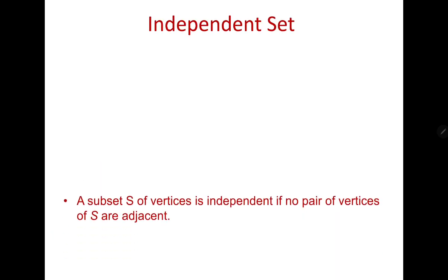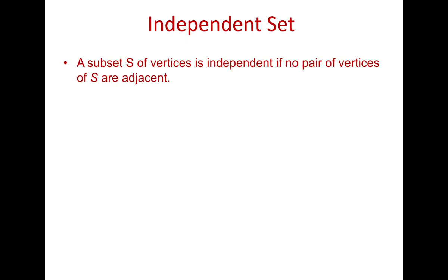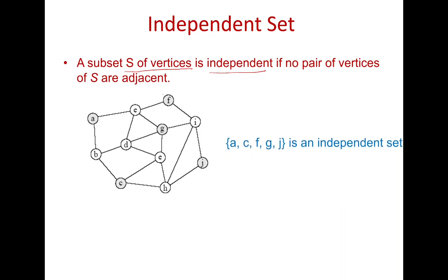In today's class we are going to discuss invariants associated with vertices; in later classes we will discuss invariants associated with the edge set. A subset of vertices S is independent if no pair of vertices of S in the given graph are adjacent. For example, the five vertices a, c, f, g, and j are independent of each other because none of them are adjacent to any other vertex in the set — so this is an independent set.